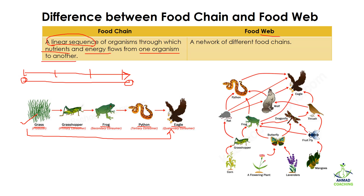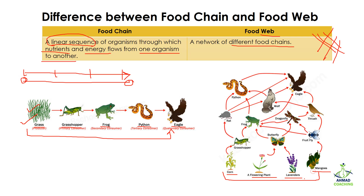In the case of a food web, it is a web — meaning it is interconnected. A food web is a network of different food chains connected with each other. Here we can see that at the base, instead of having just one plant or one grass, we have different varieties: corn, flowering plants, lavender, and mangoes. Different food chains are interconnecting with each other.